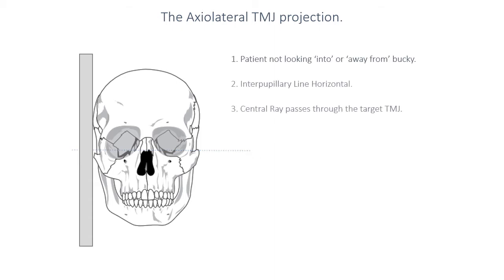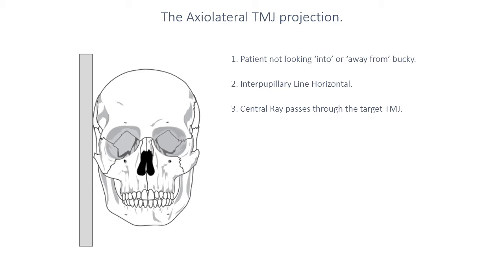Starting with the patient in a true lateral position, instead of having the central ray be horizontal, you introduce an angulation such that the central ray passes through the TMJ closest to the image receptor. This often means having a practice run — standing the patient against the erect bucky and assessing the level of their temporomandibular joints at ear hole level, to ensure the image receptor is at the correct level. Then introduce about a 25-degree caudal angulation such that it strikes the image receptor at that height, then bring the patient back in and position them in a true lateral.